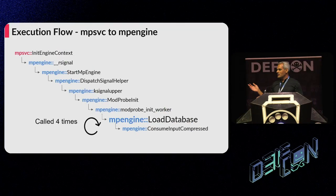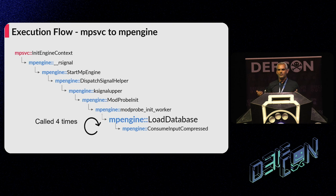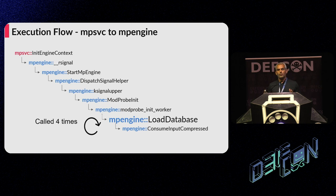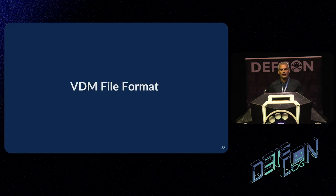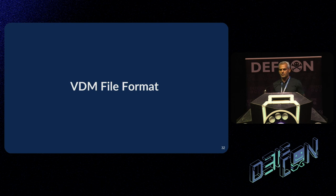After the RPC is done, the execution continues from Defender's main process and will reach the Init Engine Contents function, which starts the update process by calling the R Signal function in MP Engine DLL. Now we are ready for dynamic kernel debugging to understand the rest of the execution flow. The execution flow is pretty long — we will skip to the interesting part in the load database function, which is called for each VDM file. Now we know for sure that the VDM indeed contains the update database.